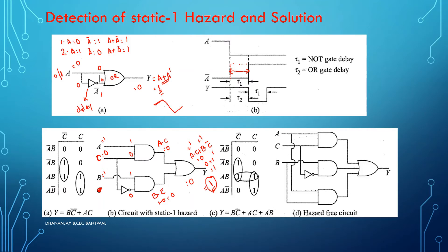You can identify a static 1 hazard in a circuit from its K-map. If you check the K-map, the grouping is fine, but there are two adjacent 1s that are not grouped. Whenever there are two adjacent 1s in a K-map and they are not grouped, those particular circuits will be exhibiting static 1 hazard.